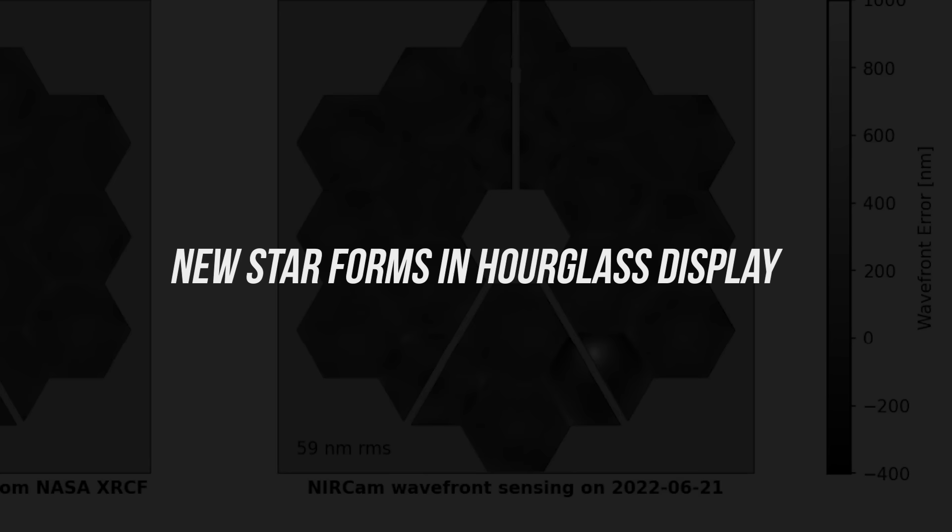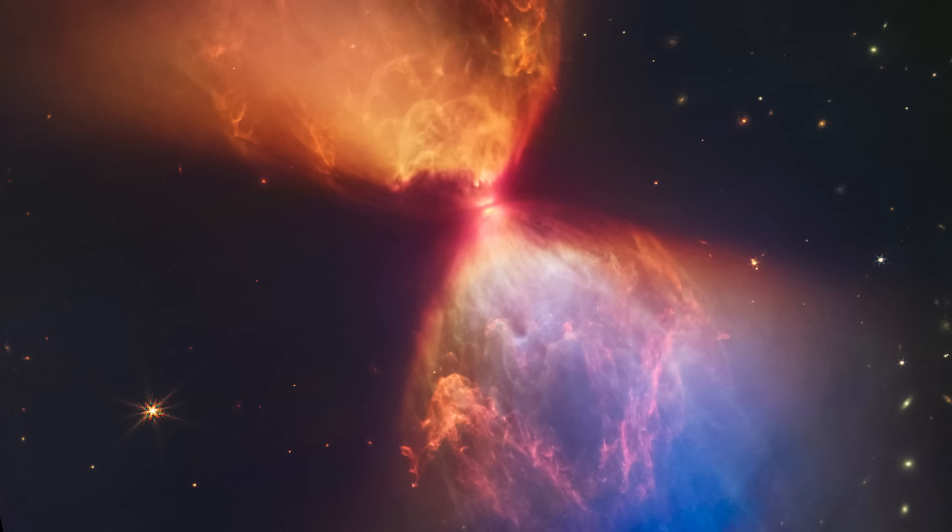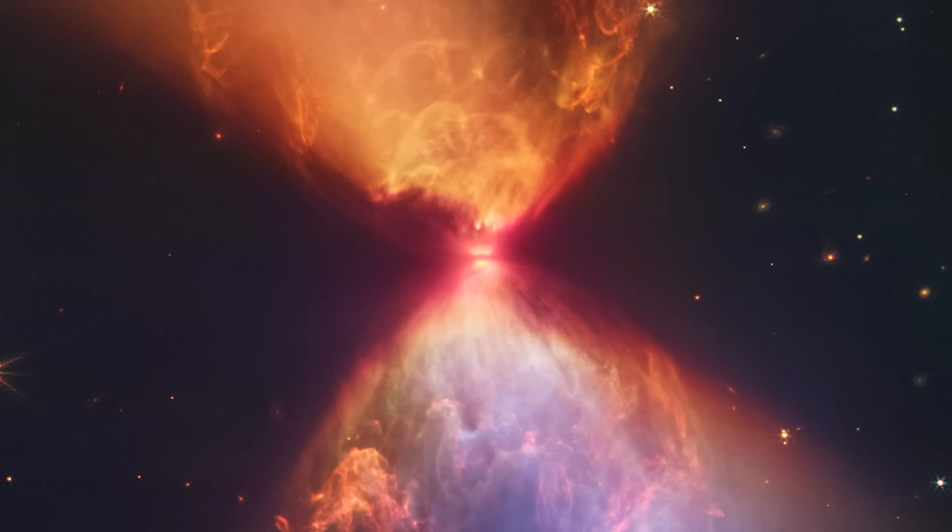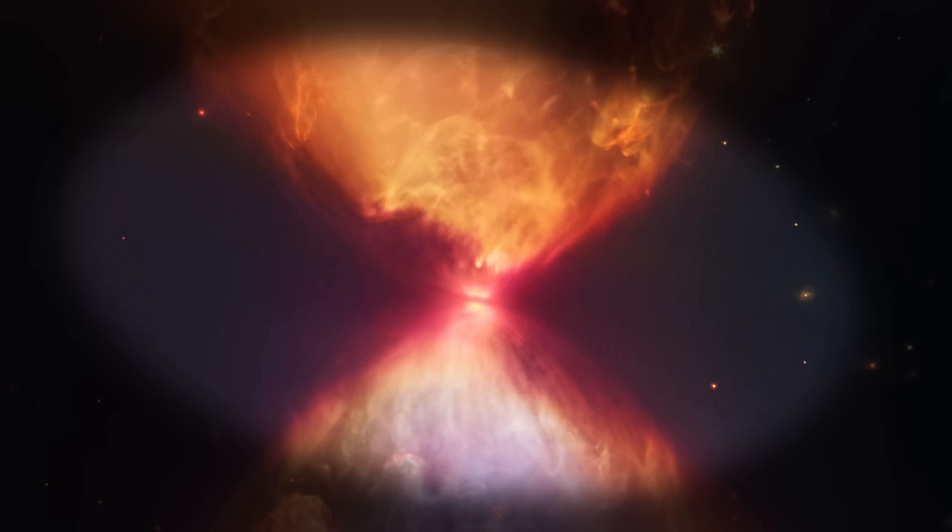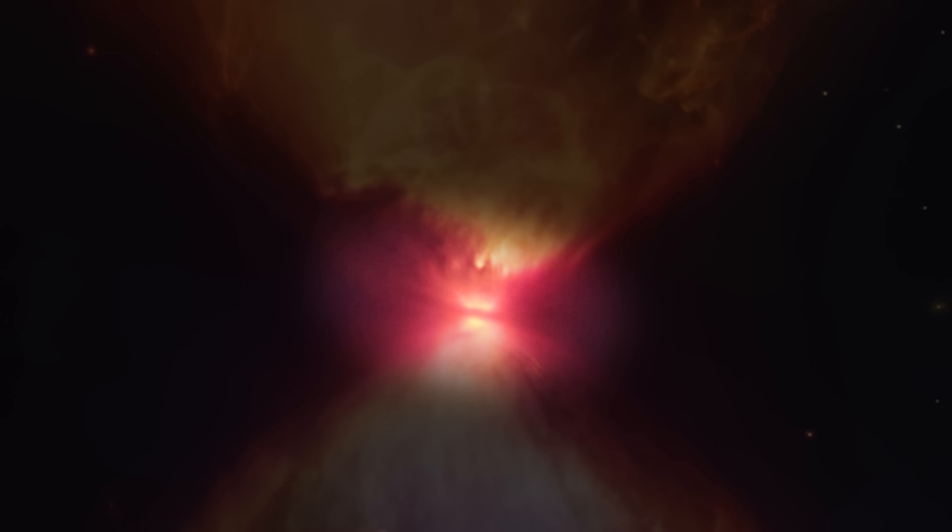In November of 2022, the James Webb Telescope captured a phenomenal image of the birth of a new star. At the relatively young age of just 100,000 years, this star is still in the protostar phase of its life. That means that it's still gathering mass from surrounding molecular clouds, a process that can take more than 5,000 years for a low-mass star. Although the protostar is hidden from view, a protoplanetary disk can be seen. It takes the form of a dark line in the center of an hourglass display.